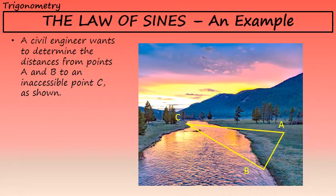In this problem, we're talking about a civil engineer who wants to determine the distance from points A and B to a third point C, that is inaccessible — in this case because it's on the other side of a river — in the situation shown in this diagram.